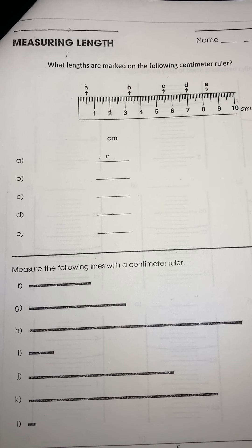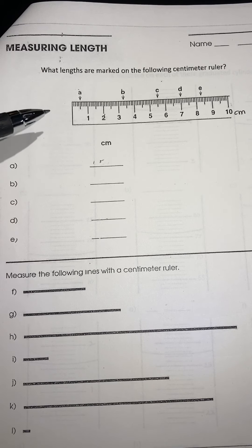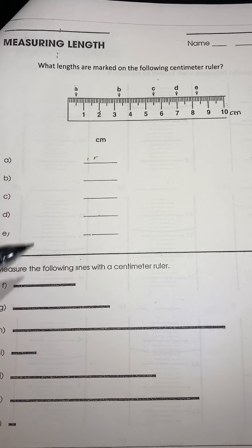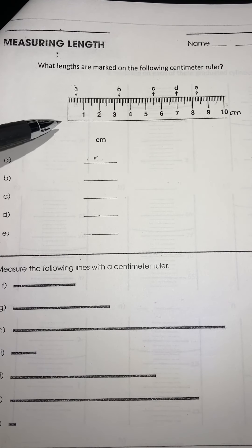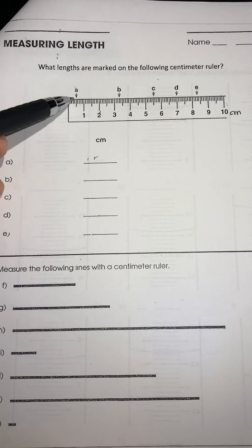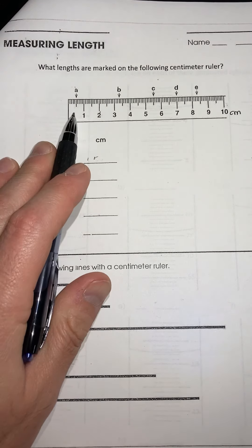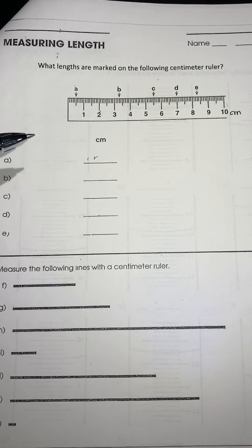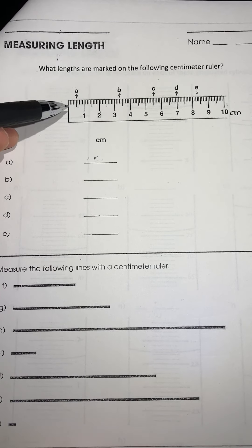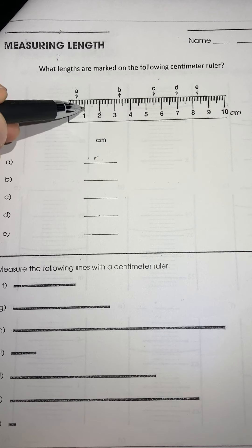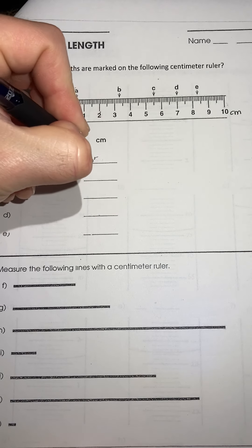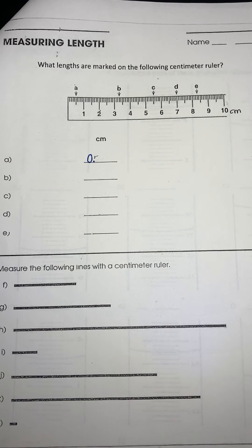The first set of problems uses a ruler that's already on here and we're going to go through and measure. This is a typical centimeter ruler. You have these markings — this is letter A. The ones place is going to be a zero because this is in between zero and one, so it's not to the one. That first place, the ones place, is going to be a zero.